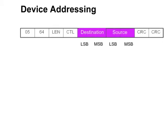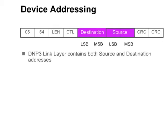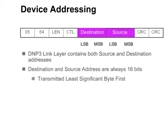The DNP3 link layer contains both source and destination addresses. The provision of a source and destination address simplifies message routing in certain network topologies. For example, having both source and destination address supports peer-to-peer systems in which a device can change its role from outstation to master. A DNP3 link address is a device's logical address. A physical device is permitted to respond to multiple addresses — that is, it may contain multiple logical devices. Each device will appear to the master as a completely separate device. The destination and source address are always 16 bits and are transmitted least significant byte first. The application layer does not contain addresses.